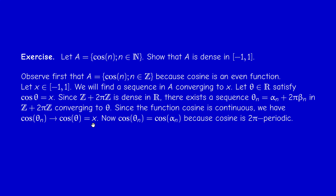Since cosine is 2π-periodic, cos(θₙ) = cos(αₙ + 2π·βₙ) = cos(αₙ), because βₙ is an integer. Now cos(αₙ) is a sequence in A because it is the cosine of an integer, so cos(αₙ) belongs to A. And it converges to x. We are done.